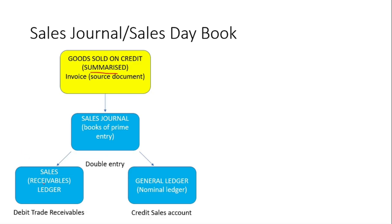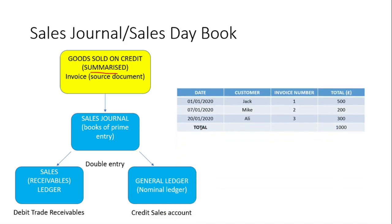The General Ledger will contain different accounts for income, expenses, and other accounts. For the Sales Ledger we're going to debit Trade Receivables and credit the Sales Account in the General Ledger. Looking at this as a table — the Sales Day Book will have a date, different customers' names, invoice numbers, and the total. The total you see here will be debited in Trade Receivables and credited in the Sales Account.